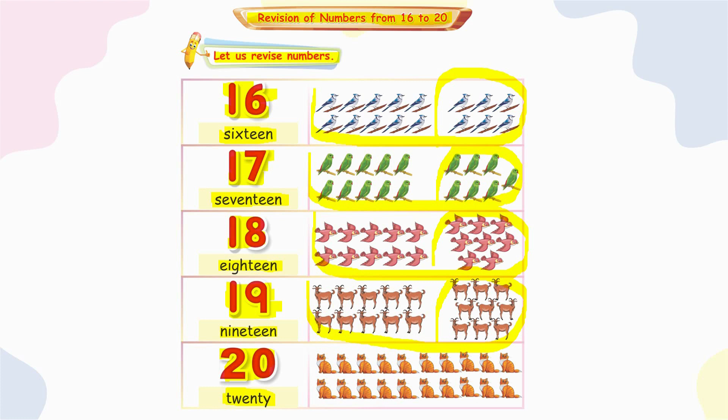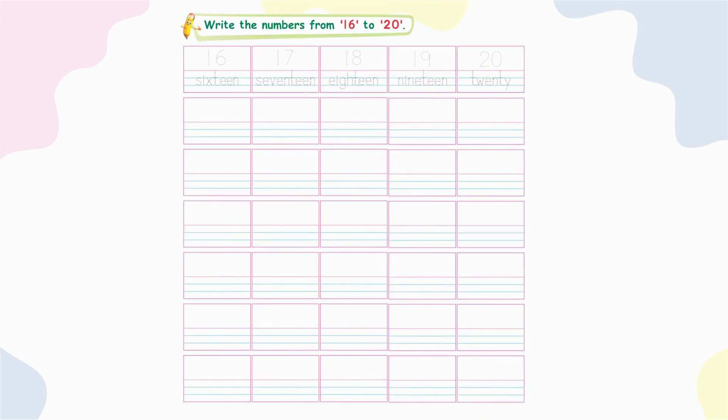Write the numbers from 16 to 20. Here you can write number 16 and the word: S-I-X-T-E-E-N, sixteen. 17, seventeen. 18, eighteen. 19, nineteen. 20, twenty.